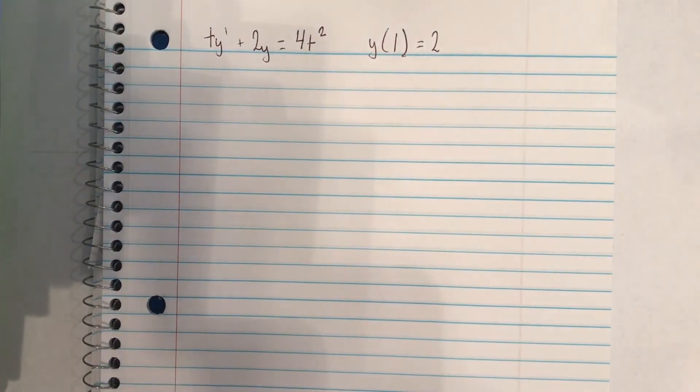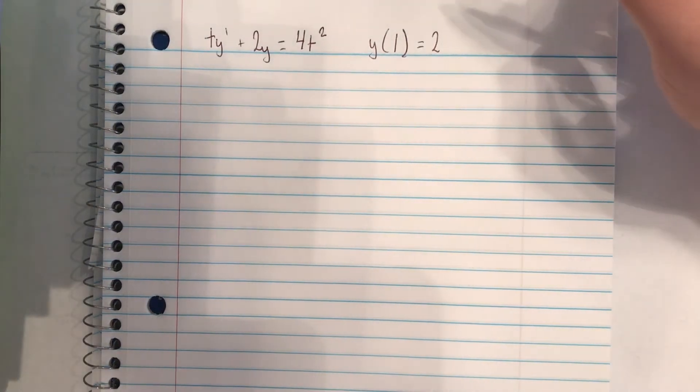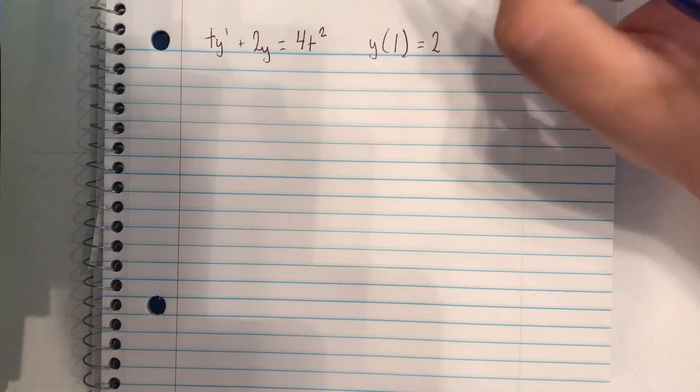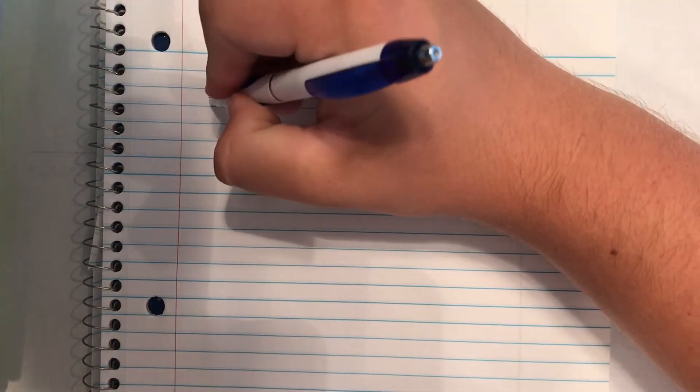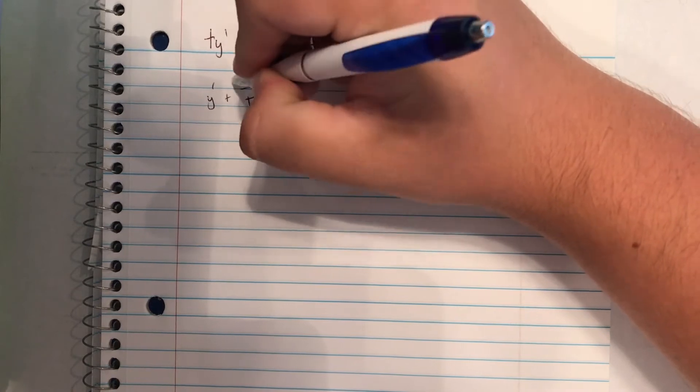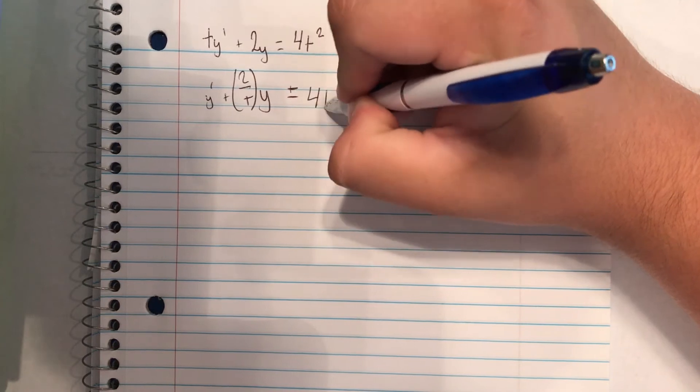This first example we have is ty' + 2y = 4t². This is actually nonlinear right now, but we'll move it to a linear equation. So we're going to divide each term by t, which gives us y' + (2/t)y = 4t.